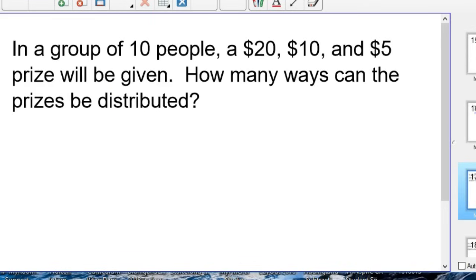So here's the first one. In a group of 10 people, a $20 bill, a $10 bill, and a $5 bill prize will be given out. How many ways can the prizes be distributed? So hit pause on the video and see if you know which this is, and then try to solve it.